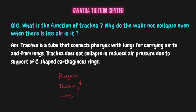The second part of question ten: why do the walls of the trachea not collapse even when there is less air in it? The trachea does not collapse because it has the support of C-shaped cartilaginous rings. These rings prevent the trachea from contracting or collapsing, even when there is no air inside.